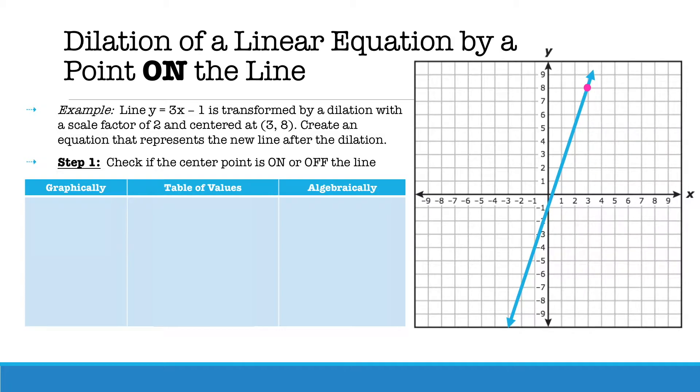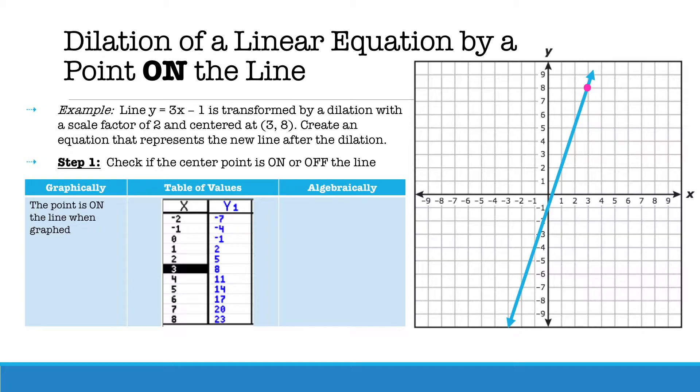If we look graphically, the point (3, 8) is on the line. Looking at your table of values, (3, 8) is in the table of values.